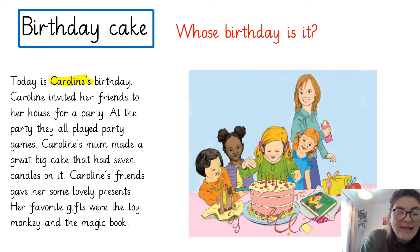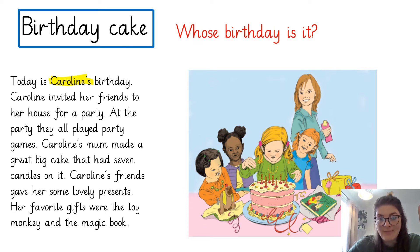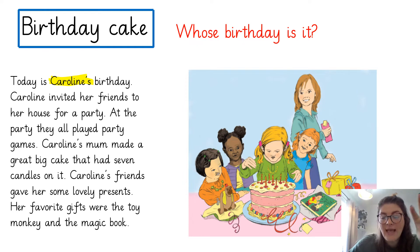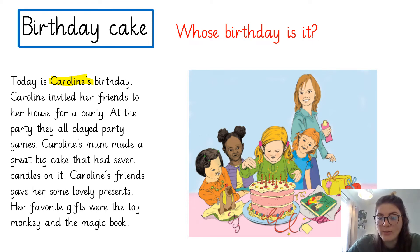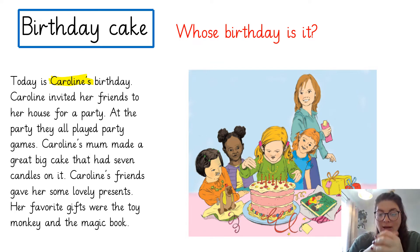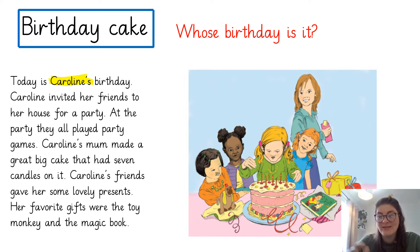Caroline is the person whose birthday it is. It talks about Caroline's birthday, Caroline invited her friends, what her friends got her, and what her mum did for her. So whose birthday is it? It's Caroline's birthday. Make sure if you've written it down, Caroline has a capital C because it's a proper noun — it's the specific name of the girl.